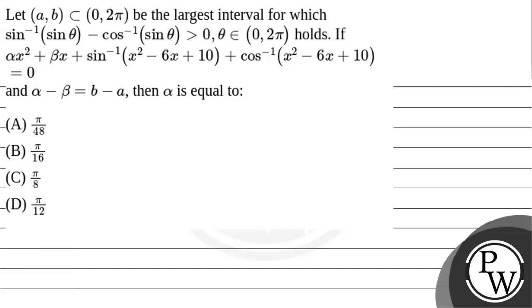Hello everyone. Let's read this question. The question says let (a,b) ⊂ (0,2π) be the largest interval for which sin⁻¹(sin θ) - cos⁻¹(sin θ) > 0, θ ∈ (0,2π) holds.